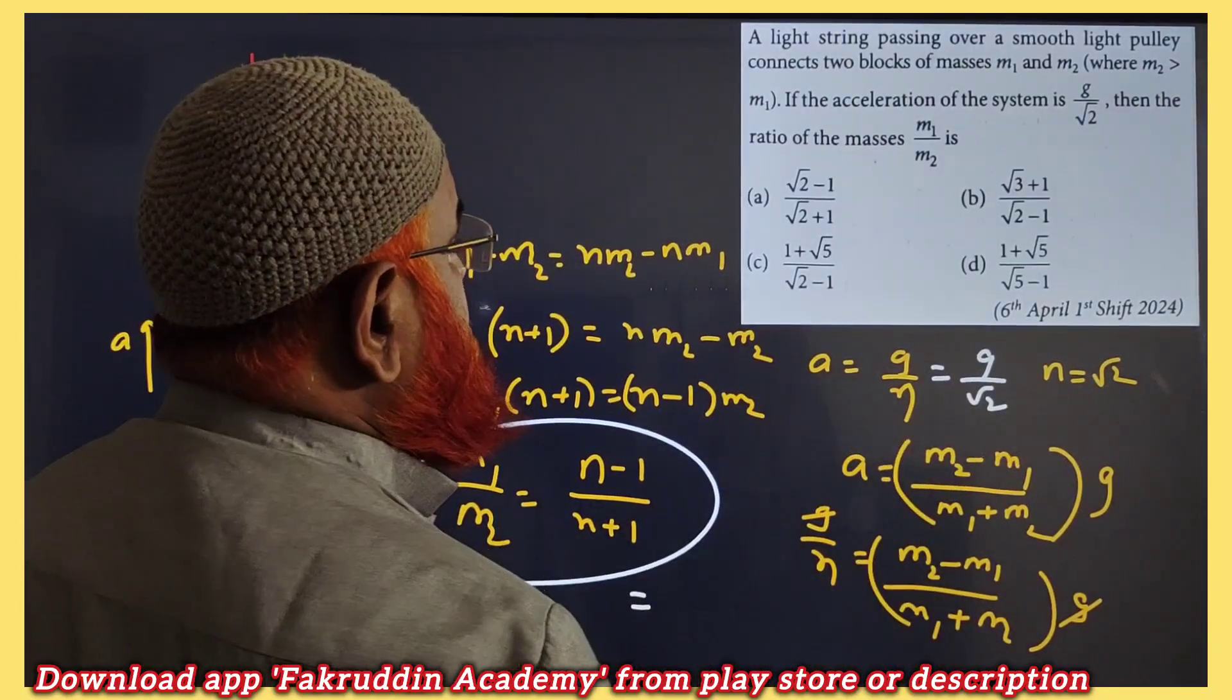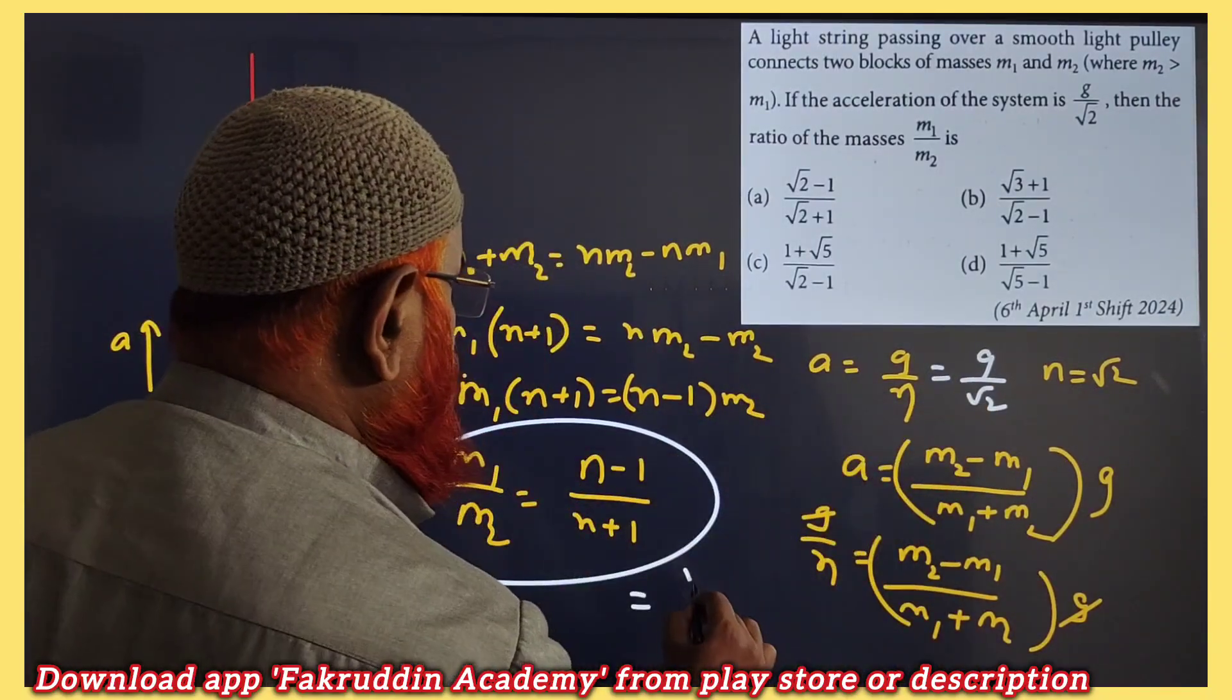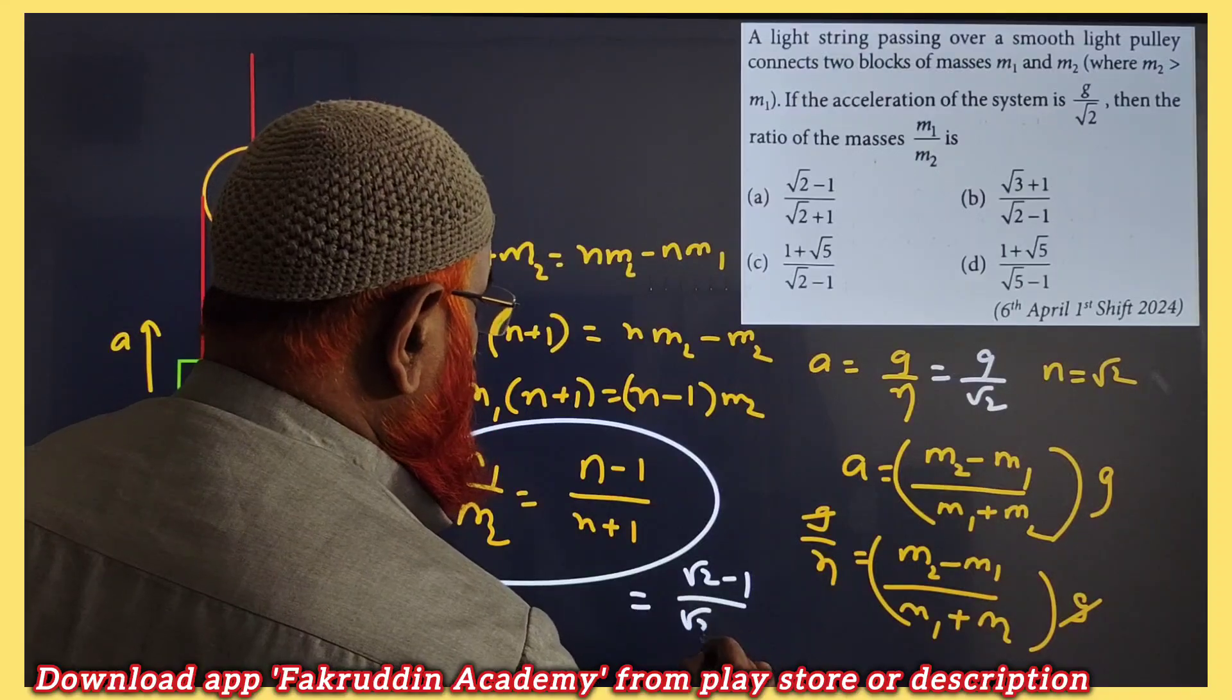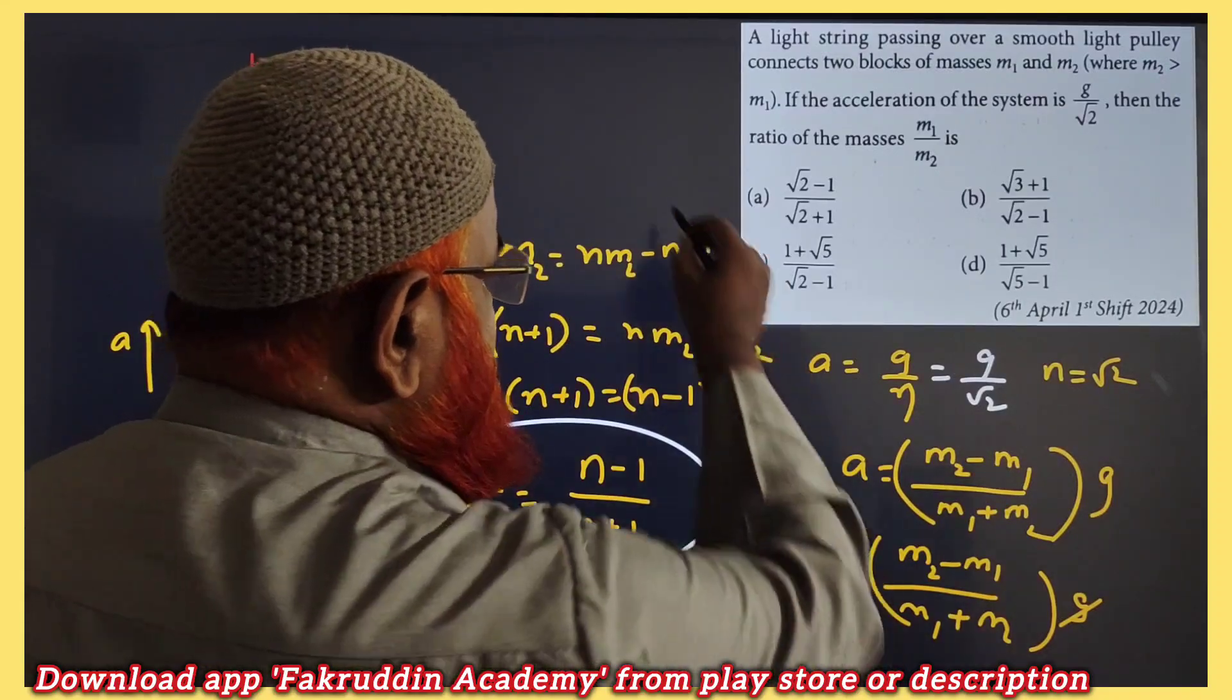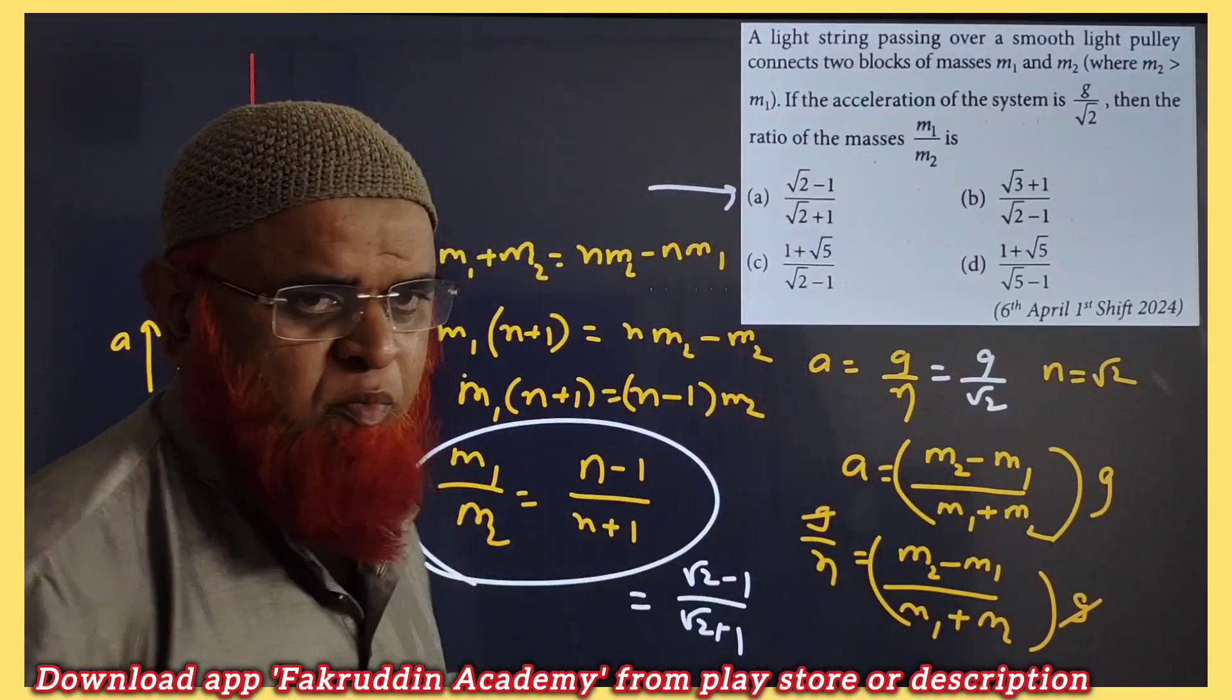Instead of n, you have to write root 2. g by n. So you will be getting root 2 minus 1 by root 2 plus 1 directly. So this is going to be our correct option. Hope you have enjoyed this.